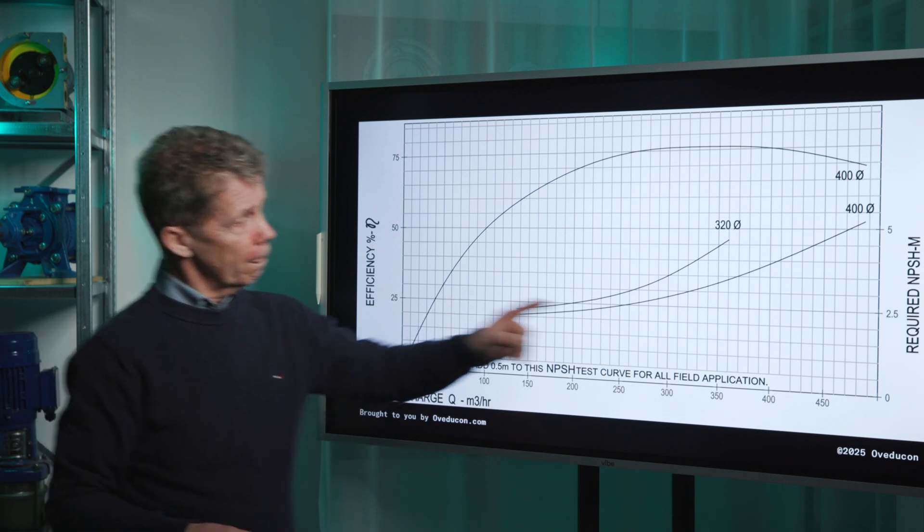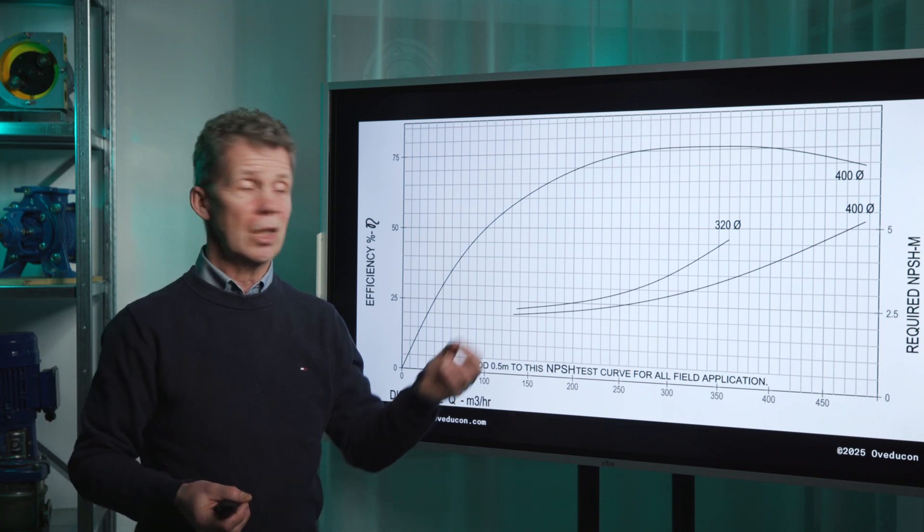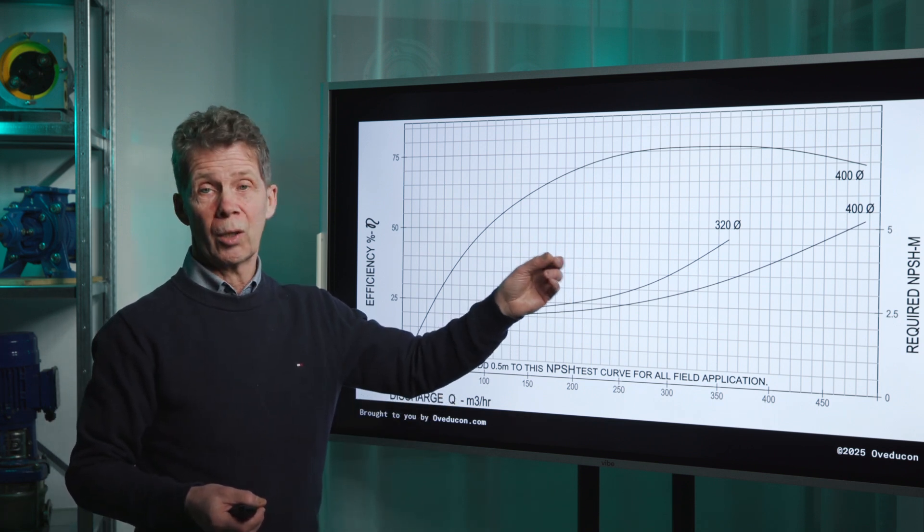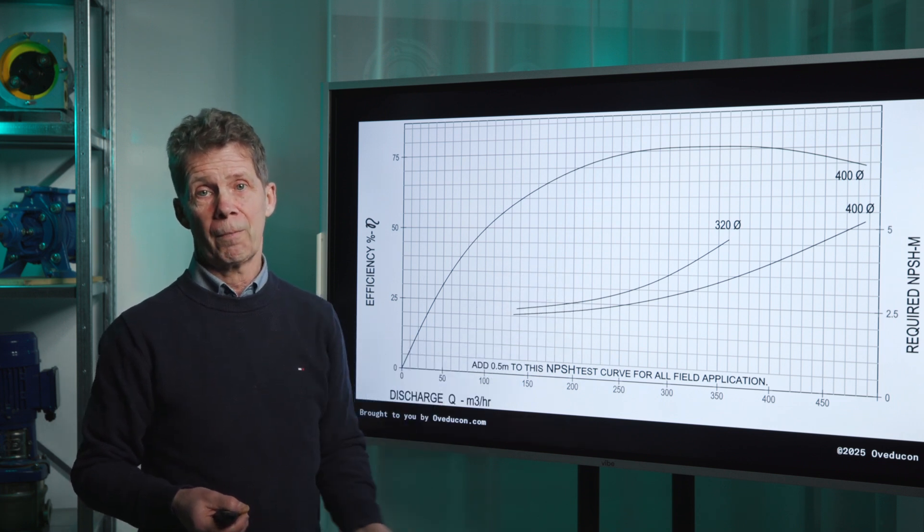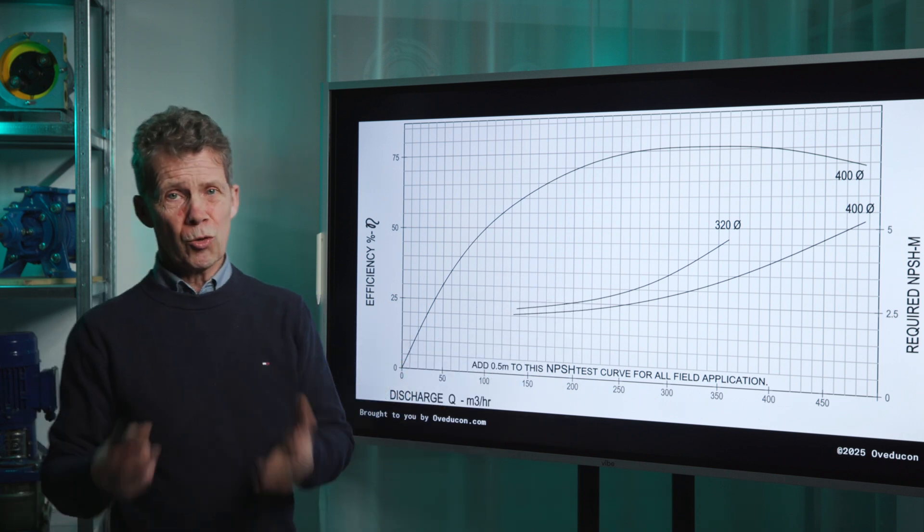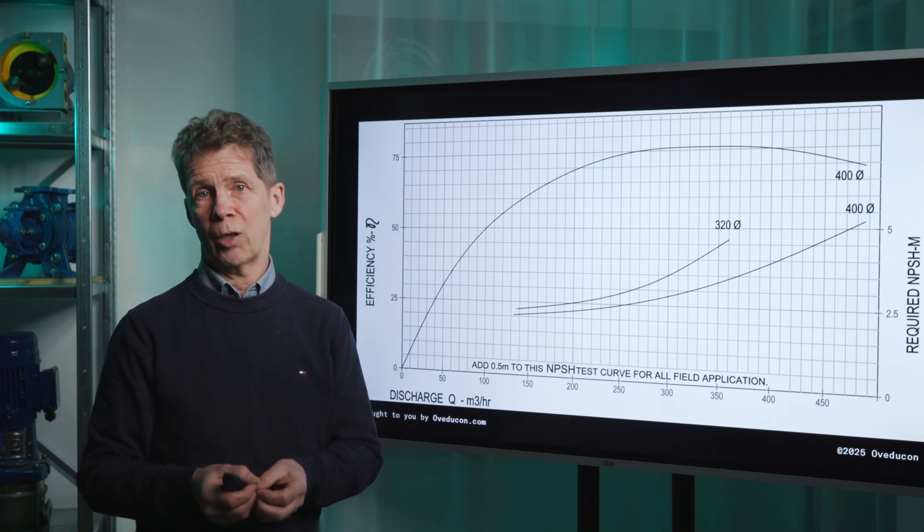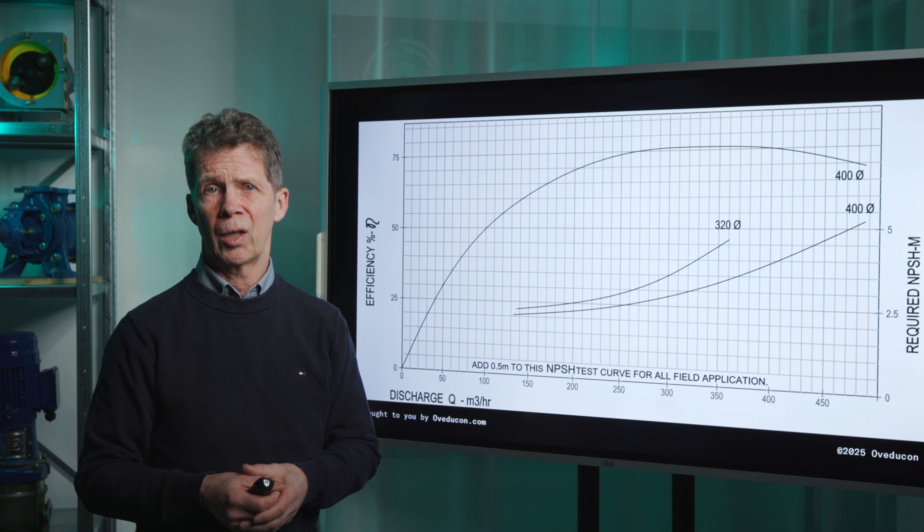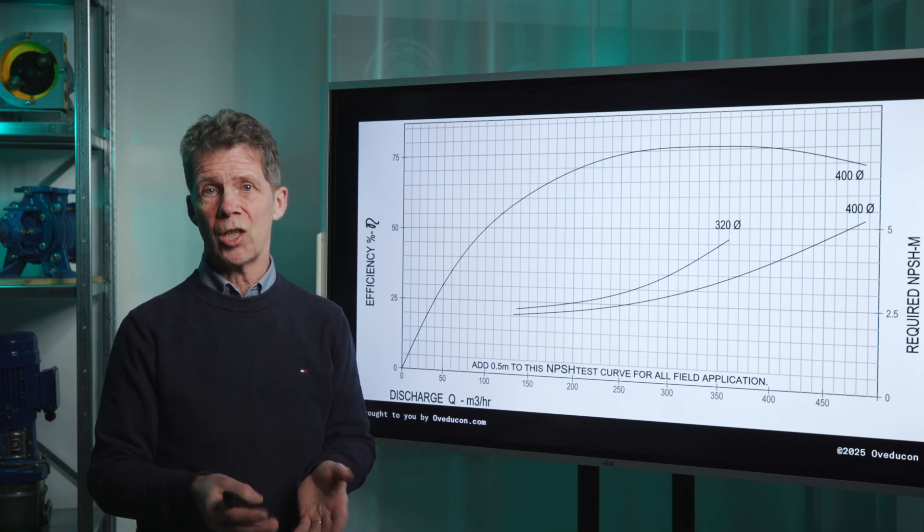Sometimes it's even in your curve and it says required NPSH and in this case it's for the NPSH required value in meters. It's also possible that you see NPSH 3 value in your pump curve. Also, in that case we are talking about the NPSH required.